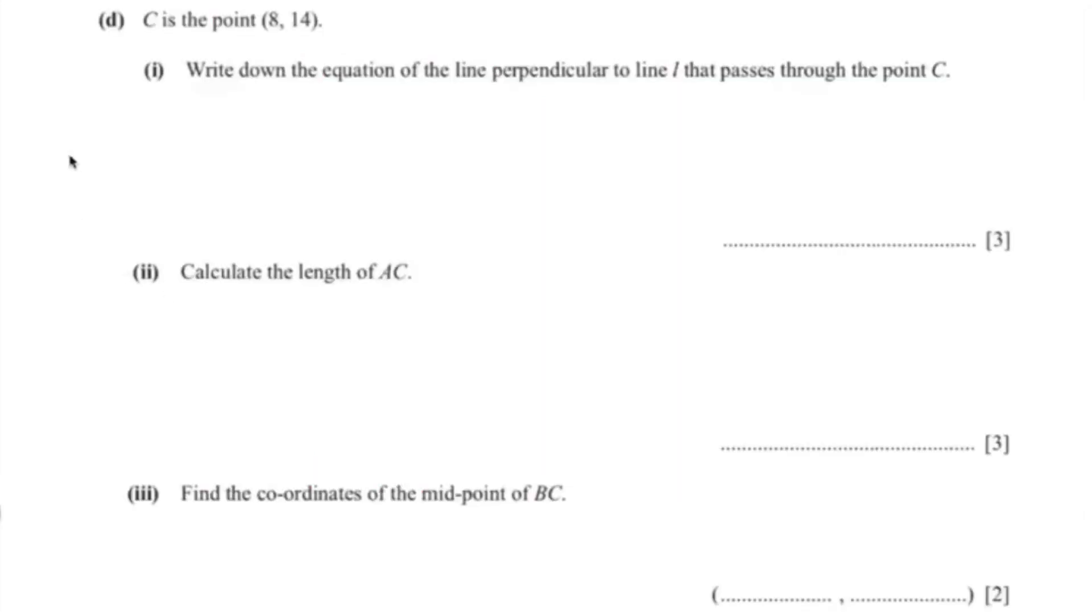So the next question is asking about the perpendicular line. So we know that the gradient is negative 4 over 5. And using this formula, we could calculate the gradient of the perpendicular line. So the gradient of the perpendicular line is negative 1 multiplied with 5 over negative 4 which is 5 over 4.